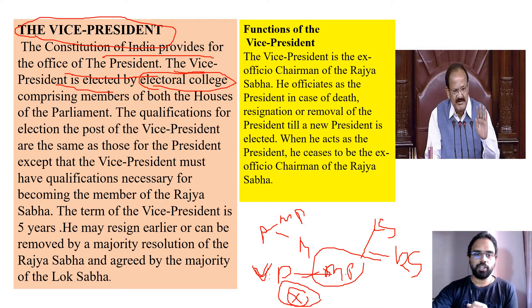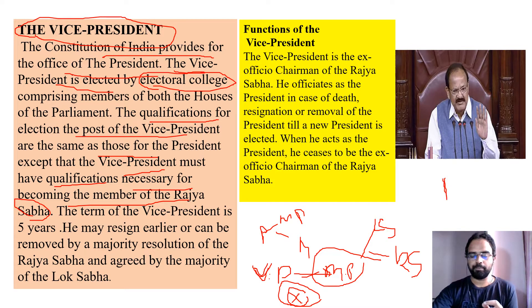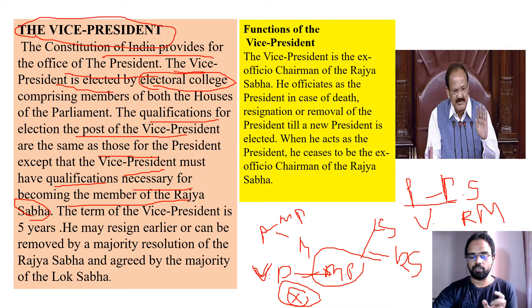The qualifications to become Vice President are similar to those of the president — he must be a citizen of India and must have crossed the age of 35 years. The key additional qualification is that he must possess the qualifications necessary for becoming a member of Rajya Sabha, whereas the president must have qualifications to become a Lok Sabha member.